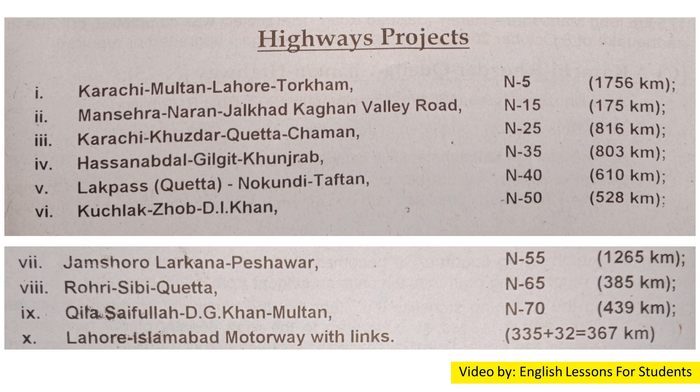Further highway routes include: Loralai Pass, Quetta to Naukundi to D.I. Khan; Kuchlak to Zhob, Zhob to Dera Ismail Khan; Jamshoro–Larkana to Peshawar; Rohri to Sibi; Sibi to Quetta; Kila Saifullah, D.G. Khan to Multan; and the Lahore–Islamabad Motorway, spanning 367 km.